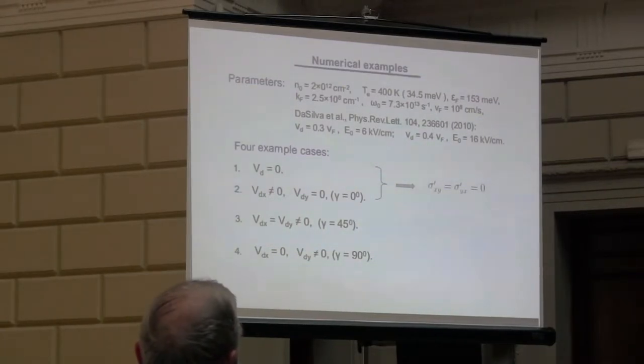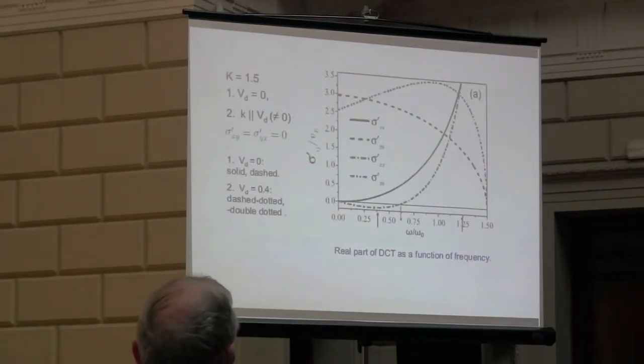For numerical examples, we use recent experiments by Darcylla from Pensacola University, which investigated steady-state transport in doped graphene. Numerical values of the bottom parameters are shown here. We have investigated four different cases: one with no drift in the electron system, and the others with slight drift velocity but with different directions of this velocity relative to the direction of the wave vector. The first two are shown here, and the results are shown here.